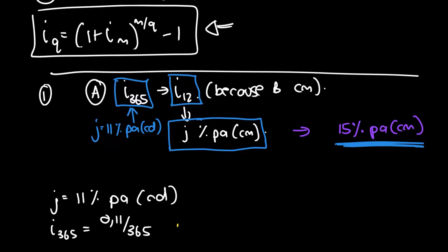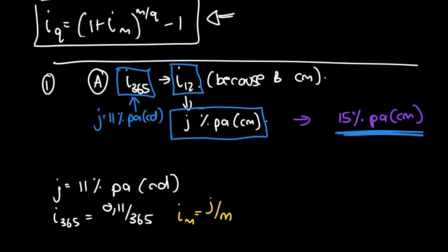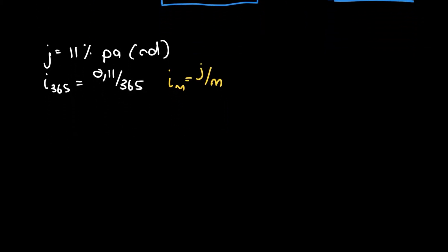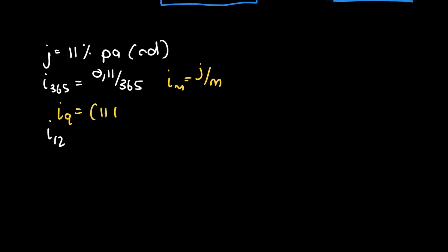Step one: take Institution A's nominal rate J equals 11% per annum compounded daily. In all formulas we need the effective interest rate, so that's 0.11 divided by 365, from iM equals J divided by M. Now we convert to I12 using IQ equals 1 plus iM, to the power of M over Q, minus 1. So I12 equals 1 plus I365, to the power of 365 over 12, minus 1.